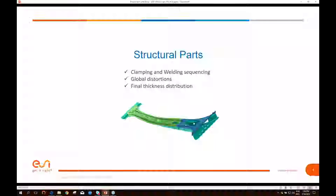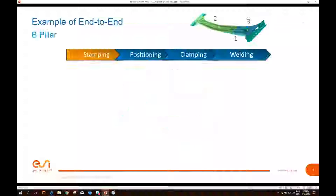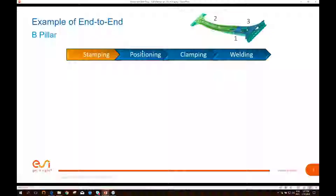Starting with structural parts: we'll look at clamping and welding sequencing, global distortions, and the resulting final thickness distribution. Taking a B-pillar as an example — this is an actual B-pillar from an OEM with three parts: the outer B-pillar (number one) and two inner B-pillars (two and three). Normally what we do is stamping, then positioning, then clamping, and then welding.